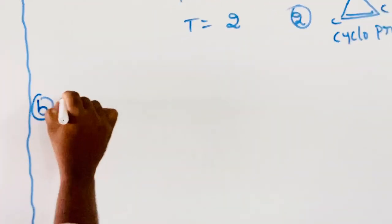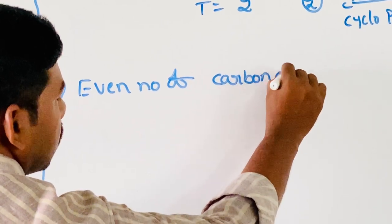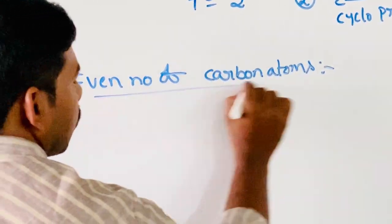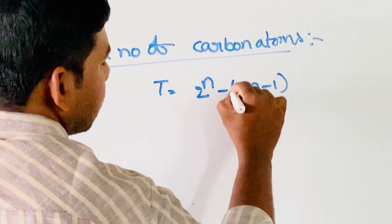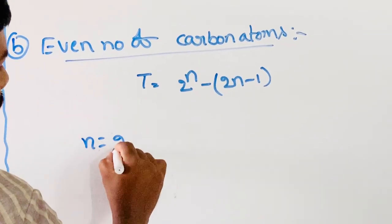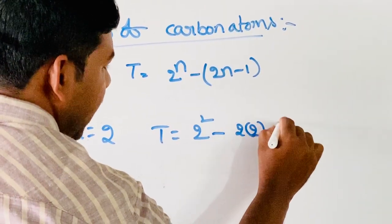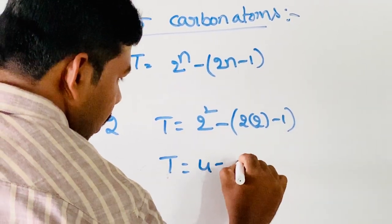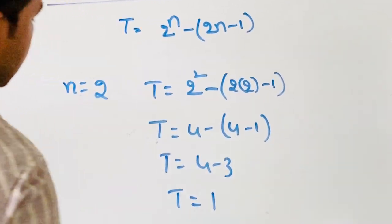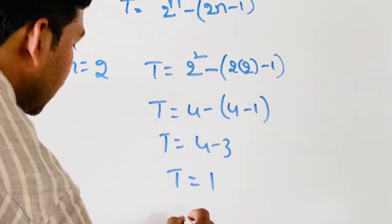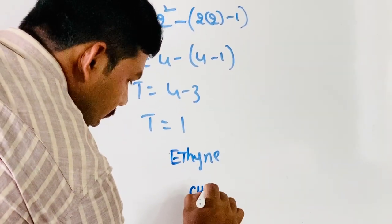For even number of carbon atoms in alkynes, total number of isomers T = 2^n - 2n - 1. For n = 2, T = 2^2 - 2×2 - 1 = 4 - 4 - 1 = 4 - 3 = 1. Total number of isomers is 1, that is ethyne: CH3-C≡CH.